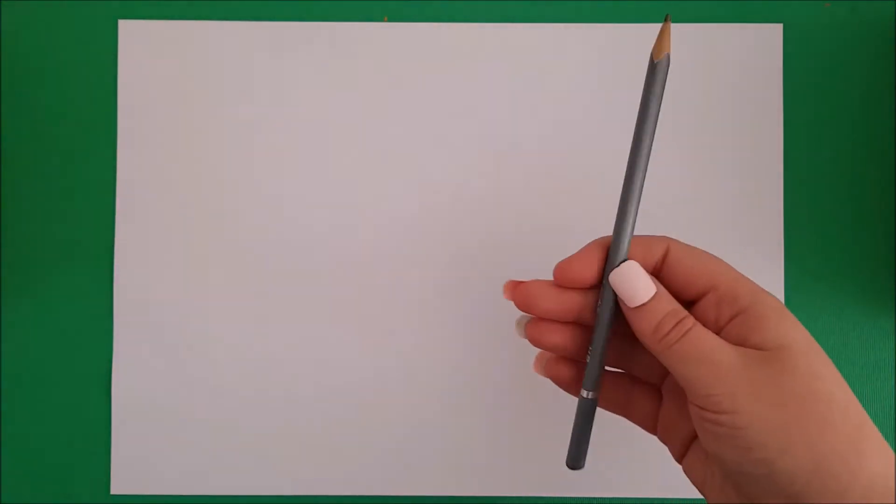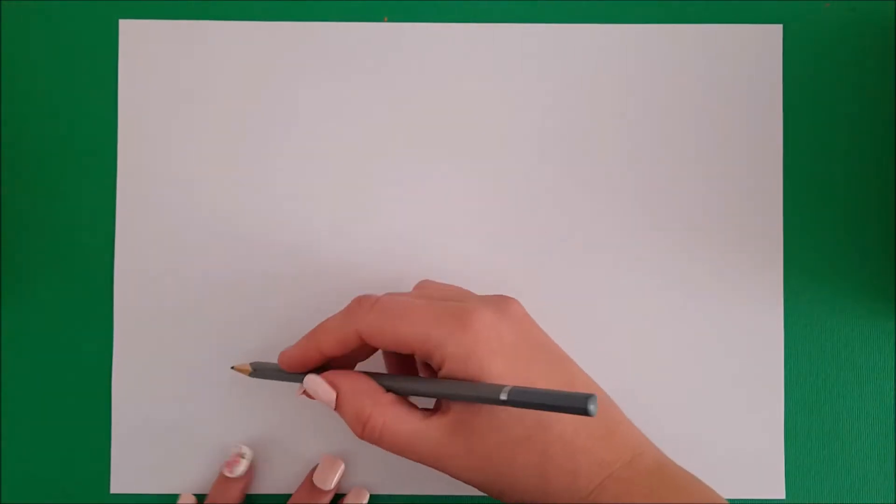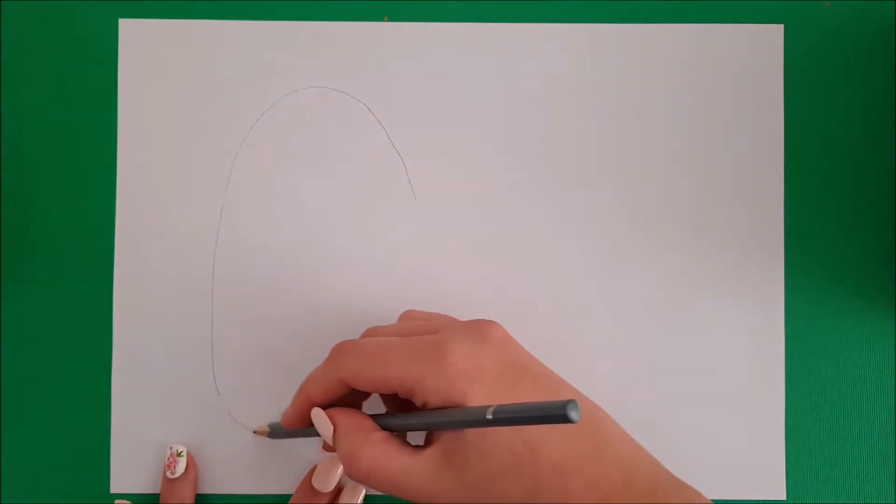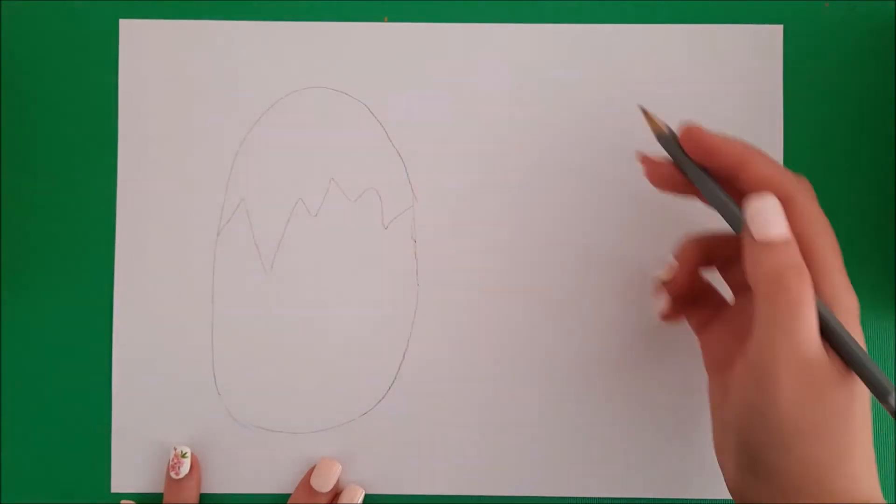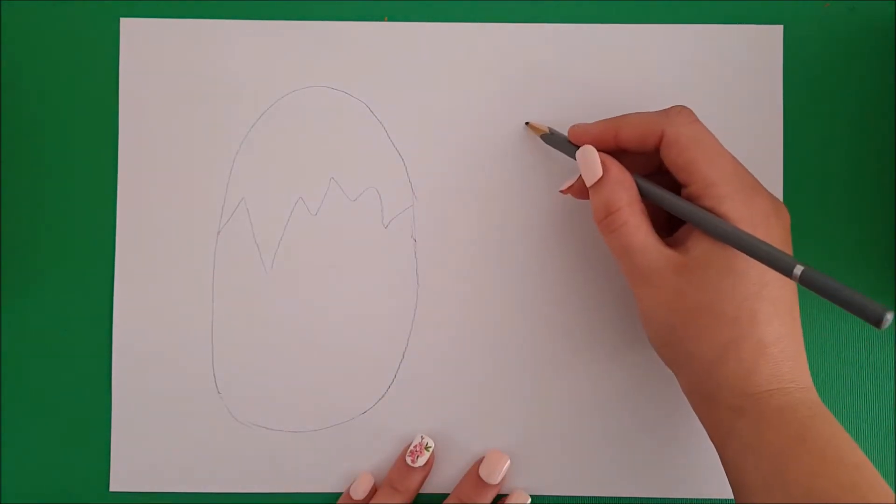Let's begin. Take your sheet of paper and draw a large oval. Then draw a zigzag shape along the top half of it. This is going to be your egg.